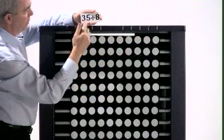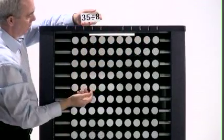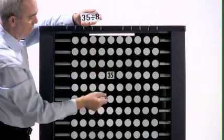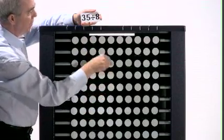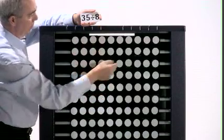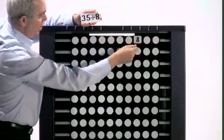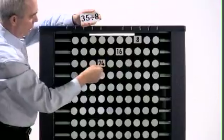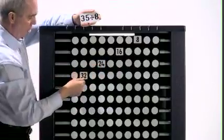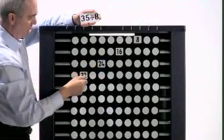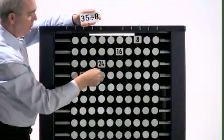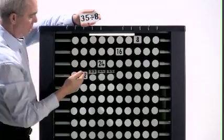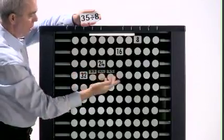35 divide by 8. 35 lives here. Divide by 8. 1, 2, 3, 4. Remainder 1, 2, 3. Remainder 3.